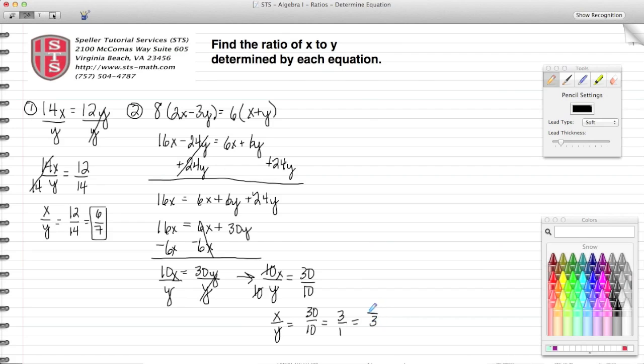And 3 over 1 just simplifies down to 3. So the ratio of x to y for this second problem would just boil down to 3.